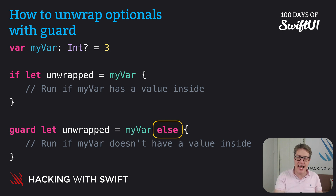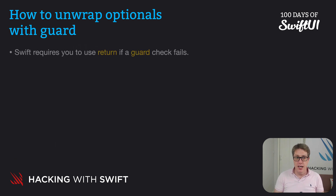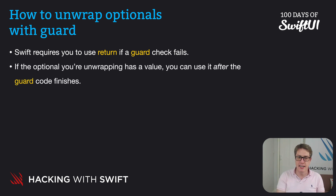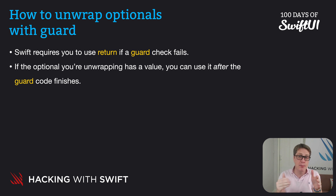Guard is designed exactly for this style of programming, and in fact there are two things to help us. First, if you use guard to check a function's input, Swift will always require you to exit the function if your tests fail — guard that this optional has a value, else bail out. You must exit the function if your check fails. And second, if the check passes and the optional has a value inside it, it gets unwrapped and put into your constant, and then it's made available after the guard code is finished. It remains in scope for you to use.